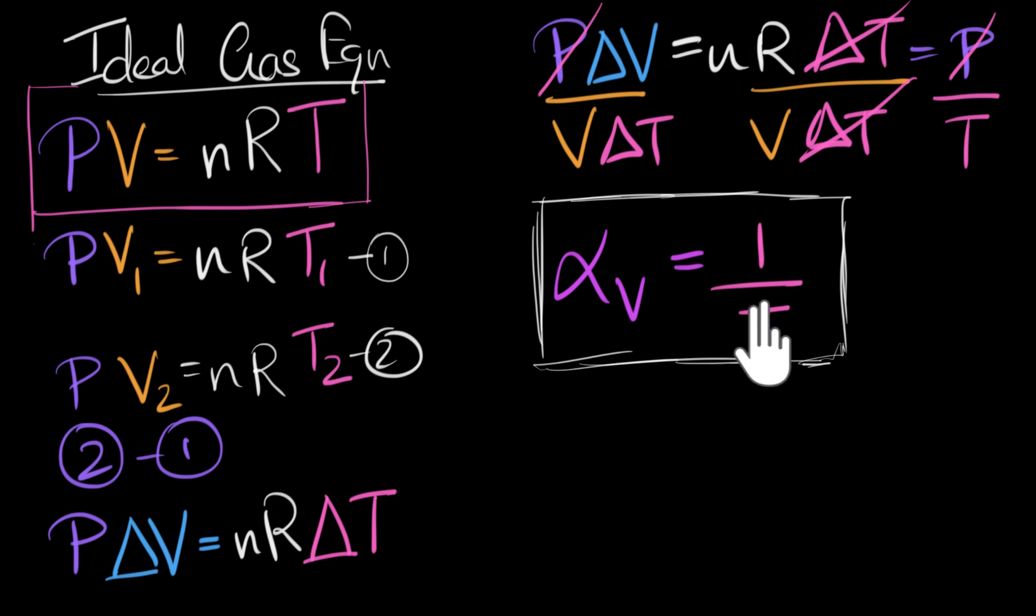The second thing to note is that for solids and liquids, different materials expand differently. But for gases, since most gases behave almost ideal, for almost all gases, we have pretty much the same value of alpha V. We can even go ahead and calculate this at some temperature. Let's say we'll do that at room temperature.